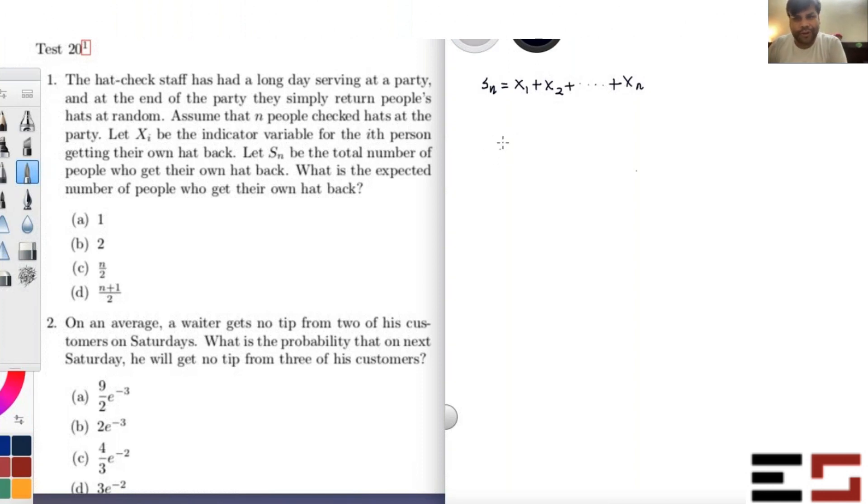Now this is actually straightforward by linearity of expectation, which we have done last time. Expected value of Sn is equal to expected value of X1 plus expected value of Xn. And all these Xi's are Bernoulli one by n random variables. The reason is because the probability with which individual one will get his own hat back is one by n, and that is true for every individual because they are symmetric.